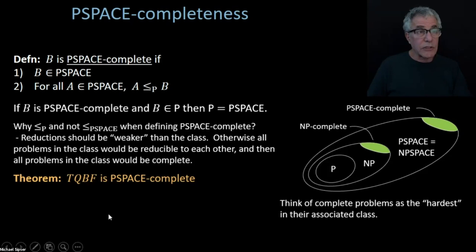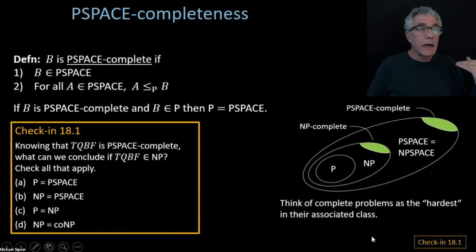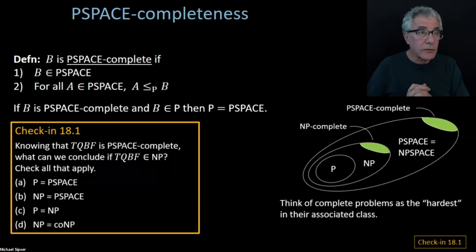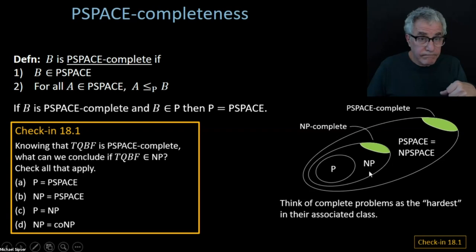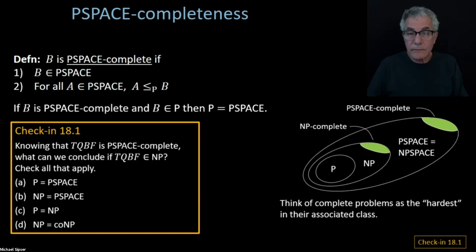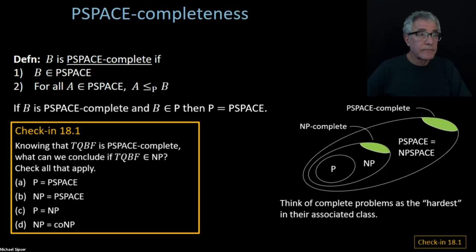In the second part of the lecture we're going to show that TQBF is PSPACE-complete. First, a check-in: suppose we've proven TQBF is PSPACE-complete. What can we conclude if TQBF turns out to be in NP but not necessarily in P?